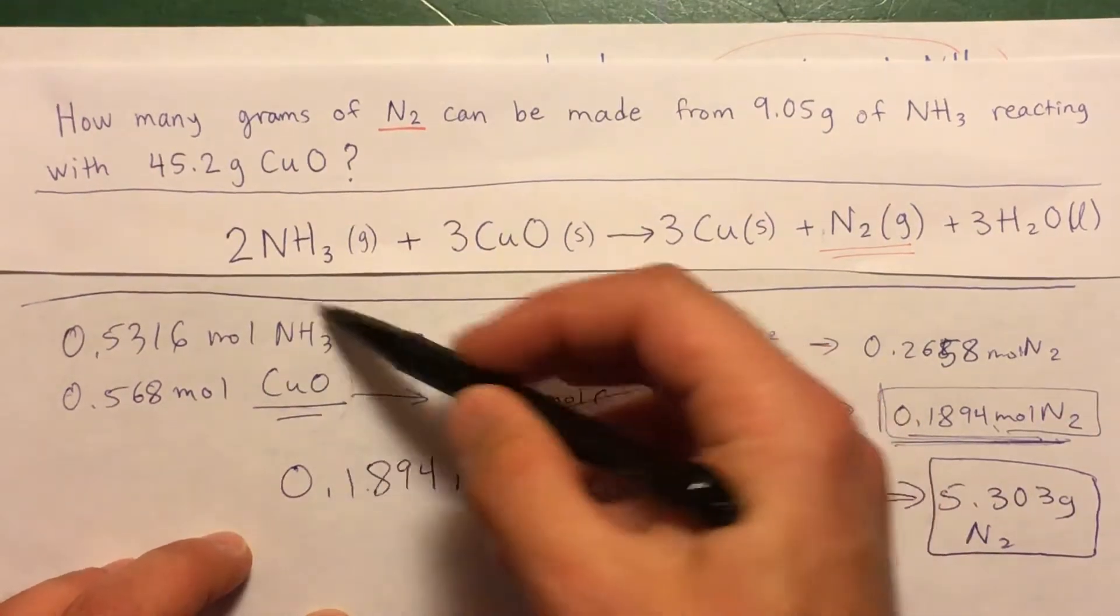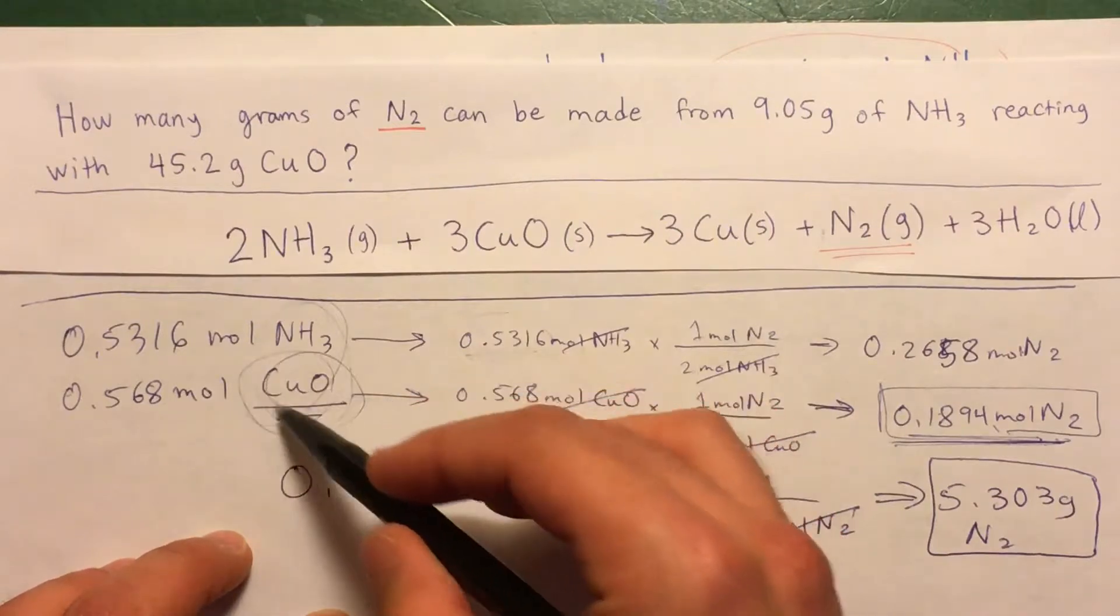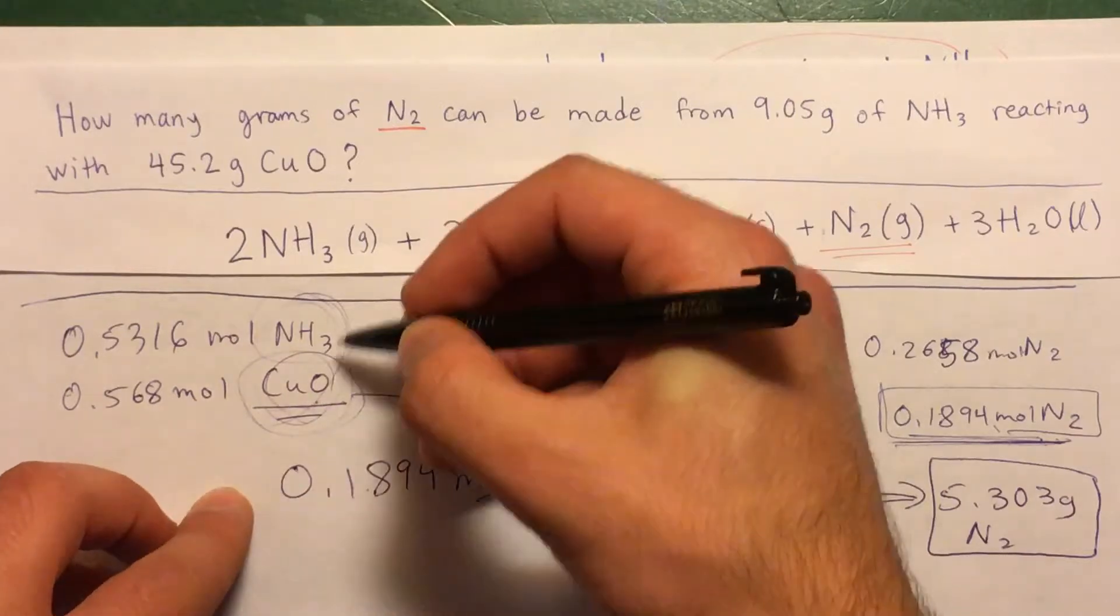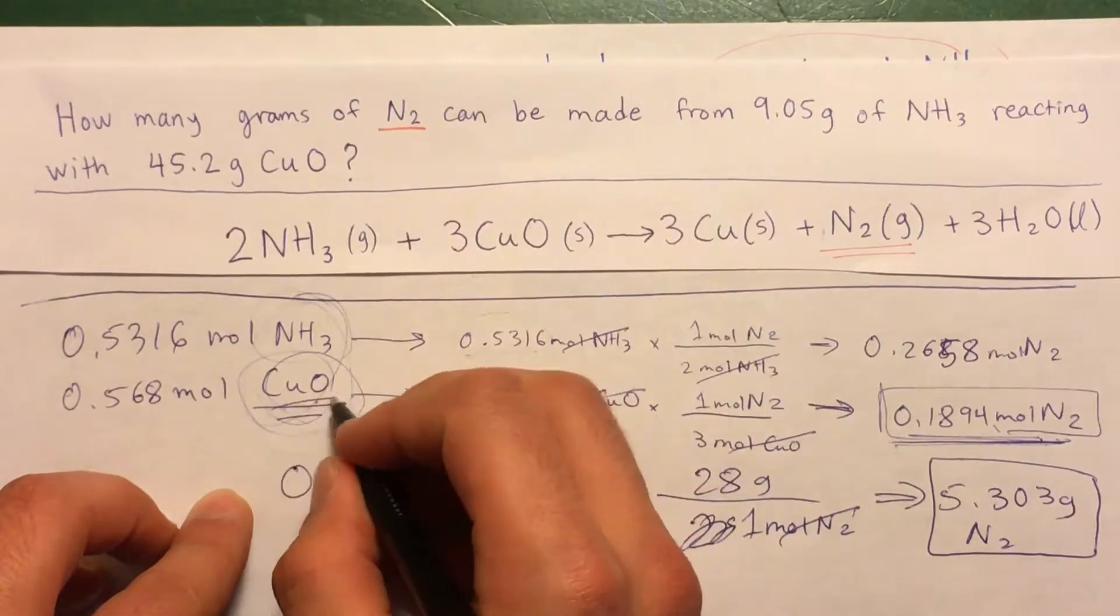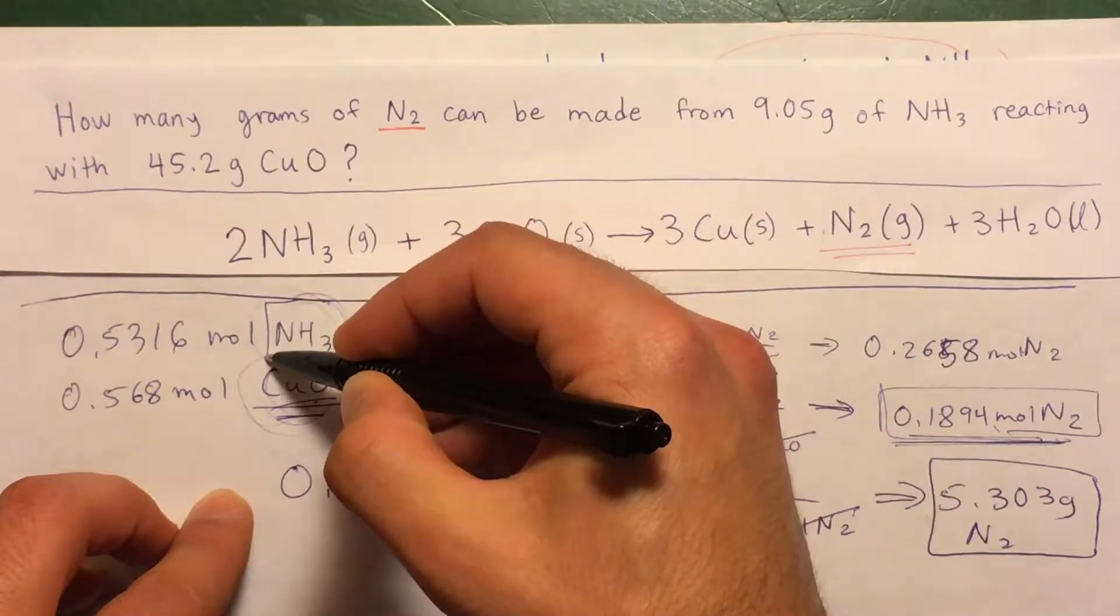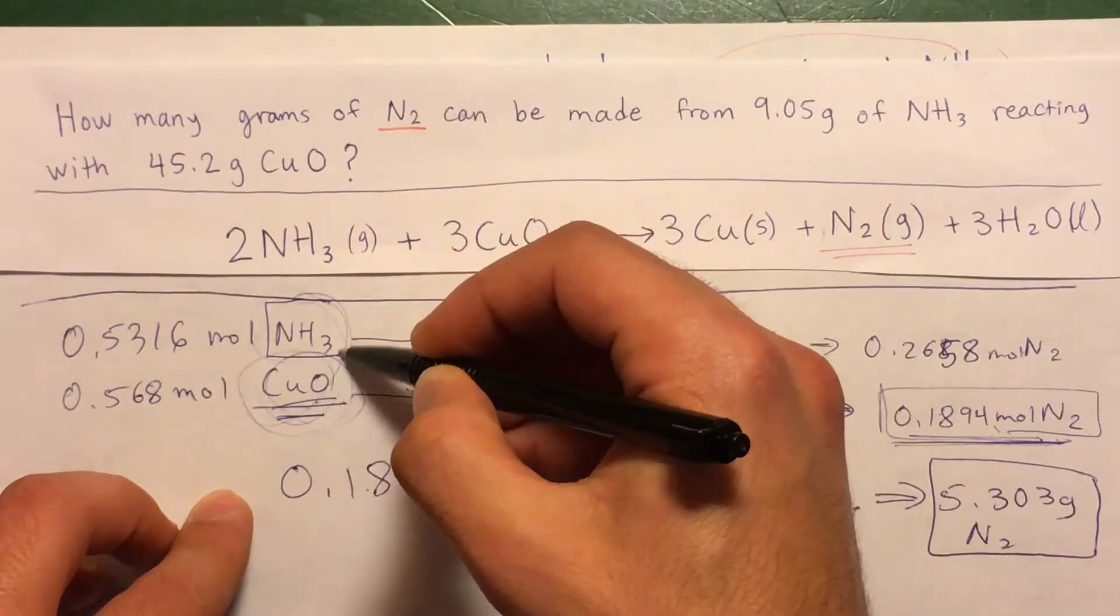So we have two options. One of them was the limiting reactant. We're left with the other one being the excess. So that means if we found that copper oxide was the limiting reactant, and you want to find how much of the excess are left over...